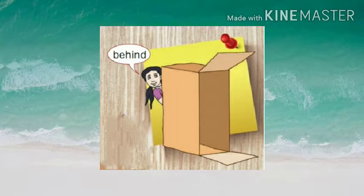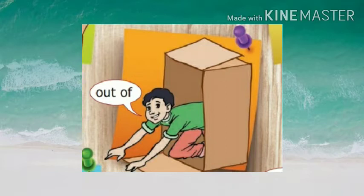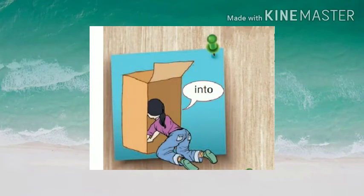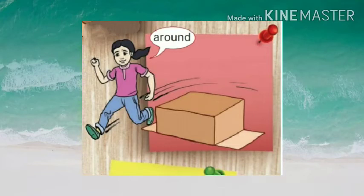In the next picture, the girl is behind the cardboard box. 'Behind' is a preposition which refers that the particular girl is behind the cardboard box. In the third picture, the boy is coming out of the box — he went inside and after some time he is coming out, so we use the preposition 'out of'. The girl in the next picture is trying to enter inside the box, so 'into' will be the preposition to explain her action. In the fifth picture, the girl is rotating around the cardboard box, so 'around' is used to mention her action.